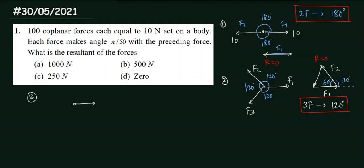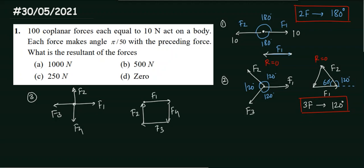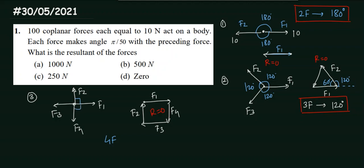Similarly, consider four forces F1, F2, F3, F4 acting on a body. If you arrange them head to tail taking them in the easiest order, since their magnitudes are equal, the figure comes out to be a closed figure and the resultant is zero. Here there are four forces making an angle of 90 degrees with each other — 4 × 90 = 360 degrees.